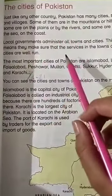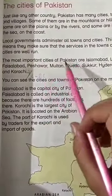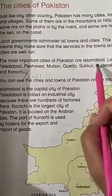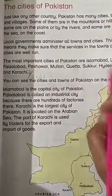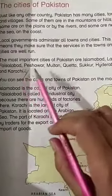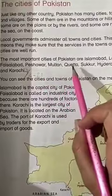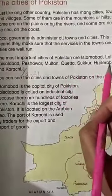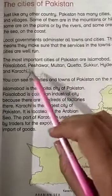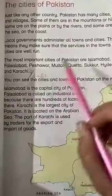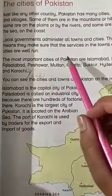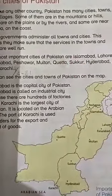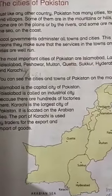In the first lecture, we studied which are the most important cities of Pakistan: Islamabad, Lahore, Faisalabad, Peshawar, Multan, Quetta, Sukkur, Hyderabad, and Karachi. Now students, let us start our next reading. Open your books to page number 3 and get the page ready.